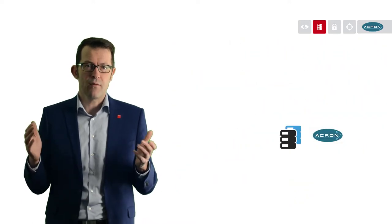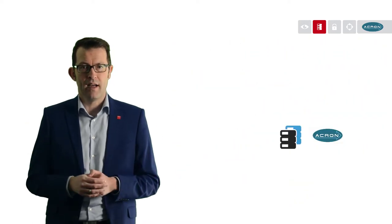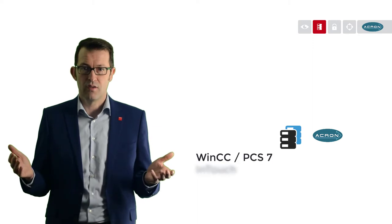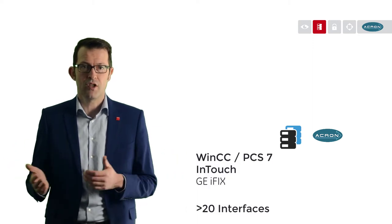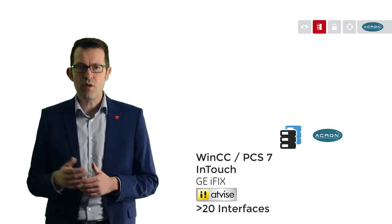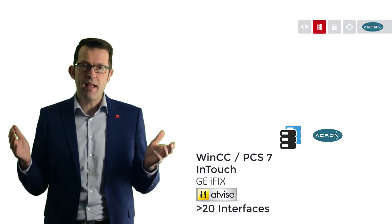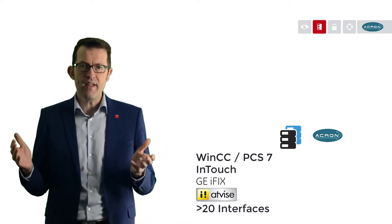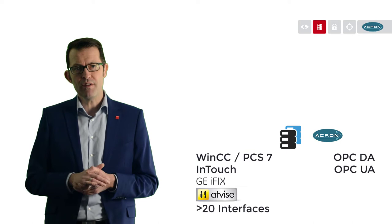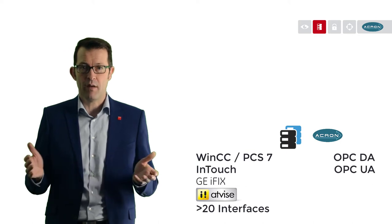One of Akron's strengths lies in the versatility of its connections. Online data from typical SCADA and DCS systems such as WinCC, PCS7, InTouch, GEIFIX, and pure web SCADA devices, as well as open data sources such as OPC DA and OPC UA, can be connected.